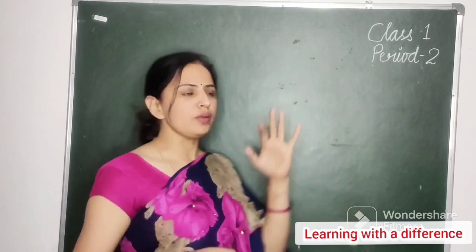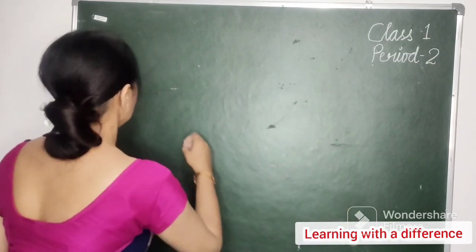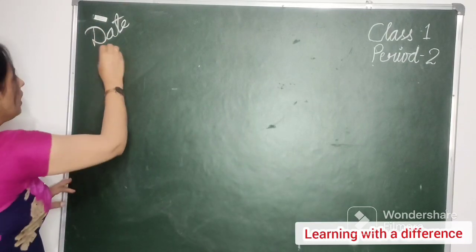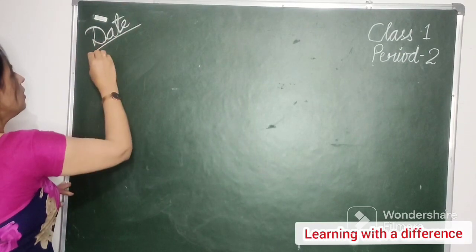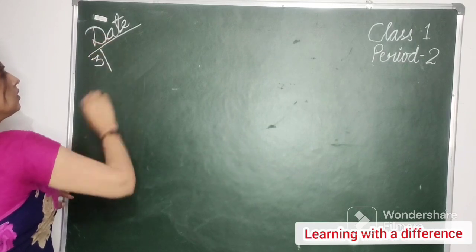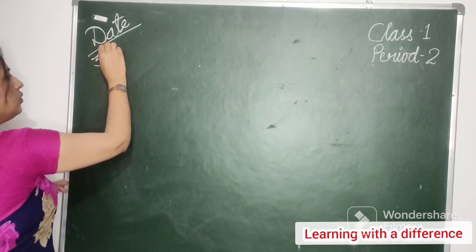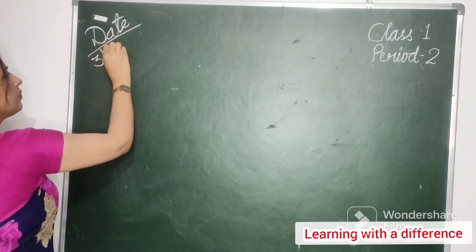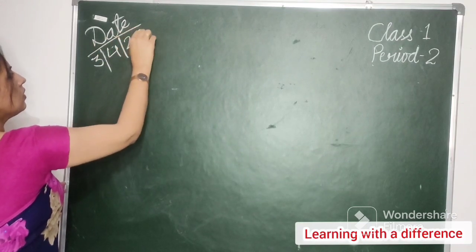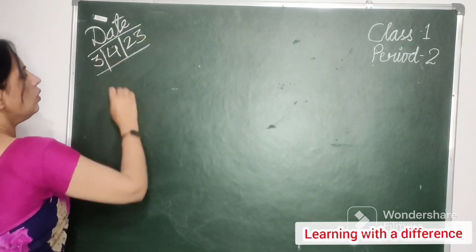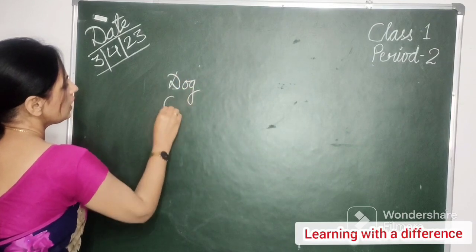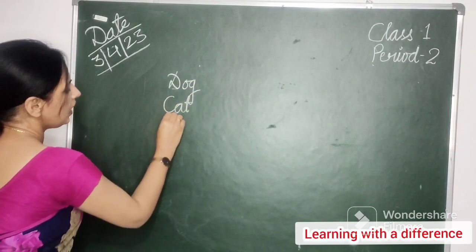Let me tell you, ma'am. Dog. Okay. Cat. Very good. Rabbit. Cow. Dog, cat, rabbit.